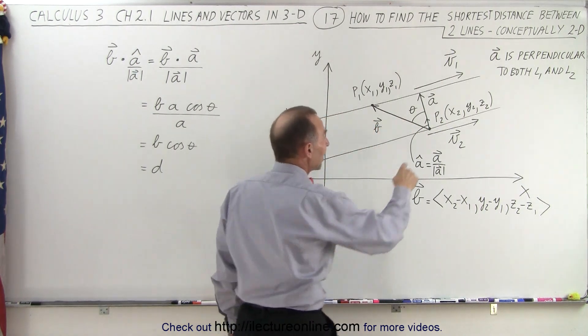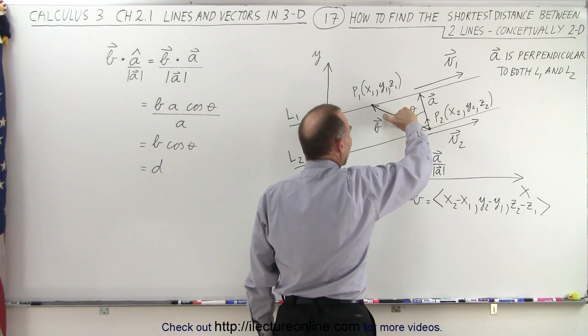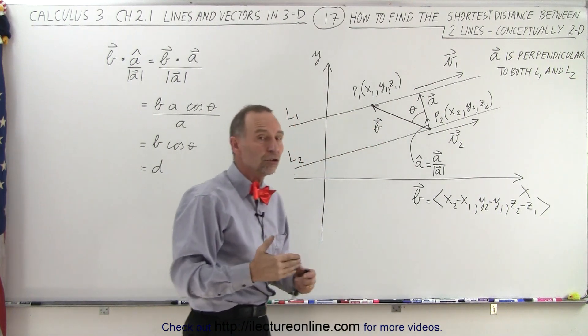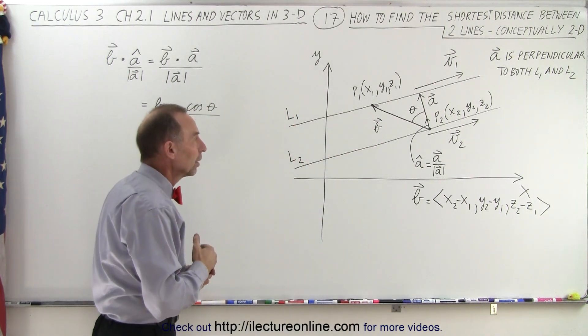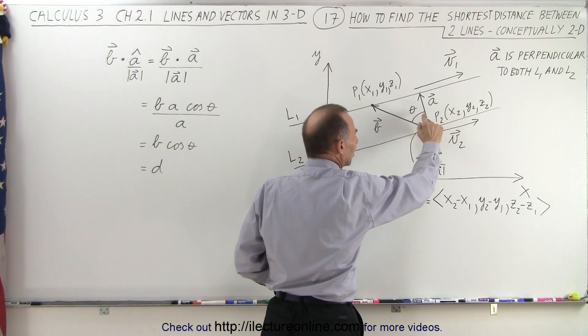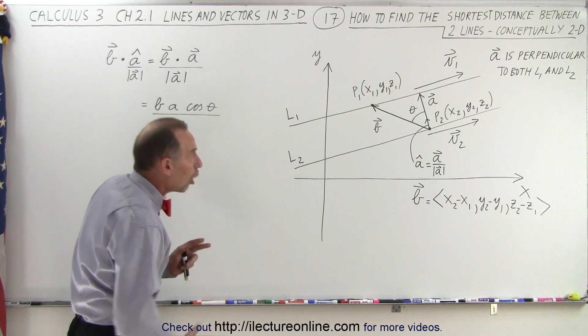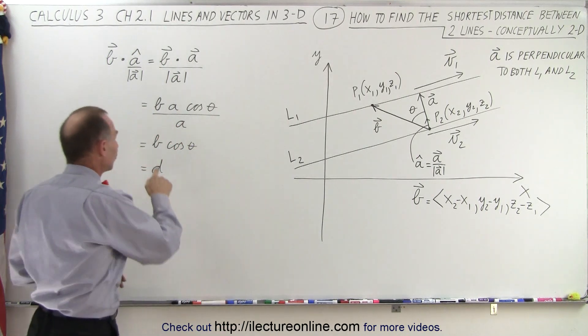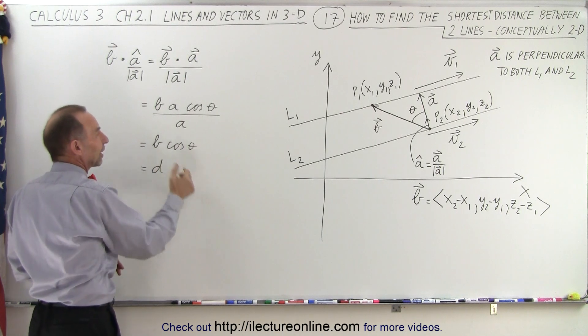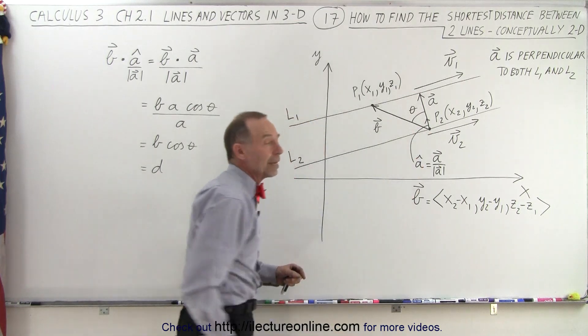we basically take the magnitude of B times the magnitude of A times the cosine of the angle between them. But if I divide by the magnitude of A and I just have the unit vector A, then it's going to be the magnitude of B times the cosine of the angle times the unit direction of A. So simply, the unit vector length here is equal to 1, so when we do the dot product, we get the component of B along the direction of A. And so we get B times the cosine of theta, which is the component of B along the vector A, which simply gives us the distance between the two lines.